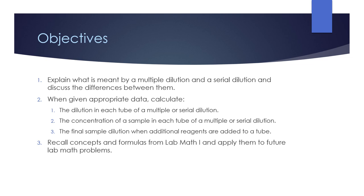The objectives for today's lecture: number one, explain what is meant by a multiple dilution and a serial dilution and discuss the differences between them. Number two, when given appropriate data, calculate the dilution in each tube of a multiple or serial dilution, the concentration of a sample in each tube, and the final sample dilution when additional reagents are added to a tube. Number three, recall concepts and formulas from lab math one and apply them to this lecture and to future lab math problems.